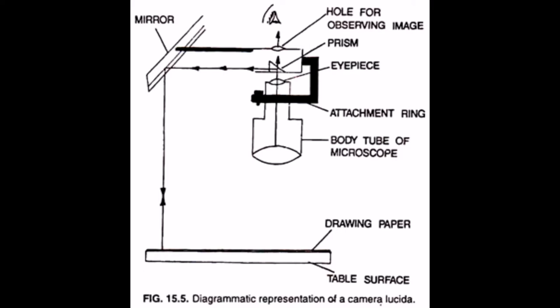There are three main parts in a Camera Lucida. They are the attachment ring, the prism, and the mirror.